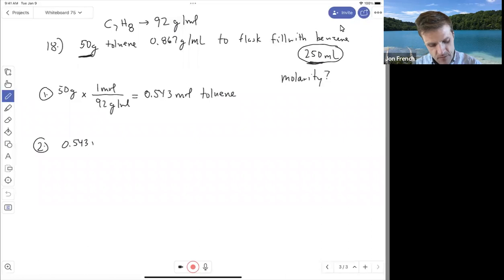And I have 0.543 moles of toluene to find molarity. We want moles per liter. I have a 250 milliliter solution, which is 0.250 liters. So I've got that many moles in this many liters of solution.